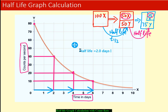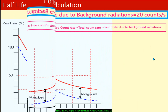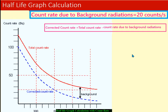So that is how we have calculated half-life from a simple graph. Now let's move on and calculate half-life when background radiations are not ignored. In this graph, the count rate of background radiations is given as 20 counts per second.